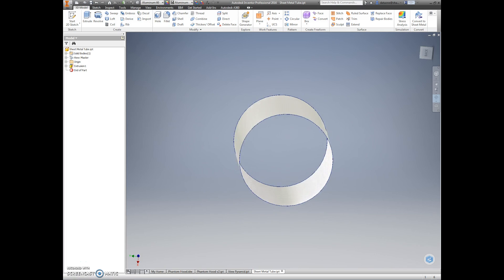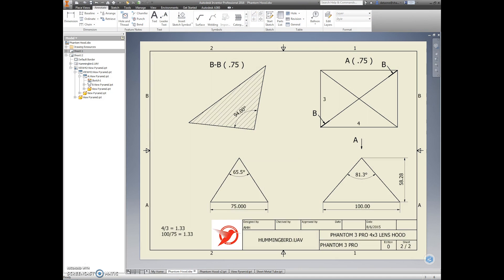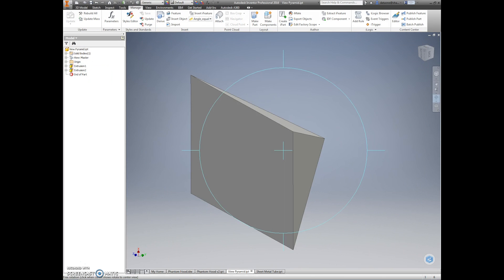We start with a 3D model of a tube that matches the phantom lens barrel, then a view cone which has the same view angle as the phantom camera. This is a 4 by 3 aspect ratio.